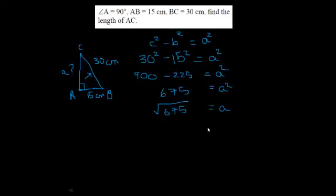If the question asks you to round to one decimal place, you'll probably need to use your calculator to work that out. So if you put the square root of 675 into your calculator, you'll get something like this. 25.98076 and so on.